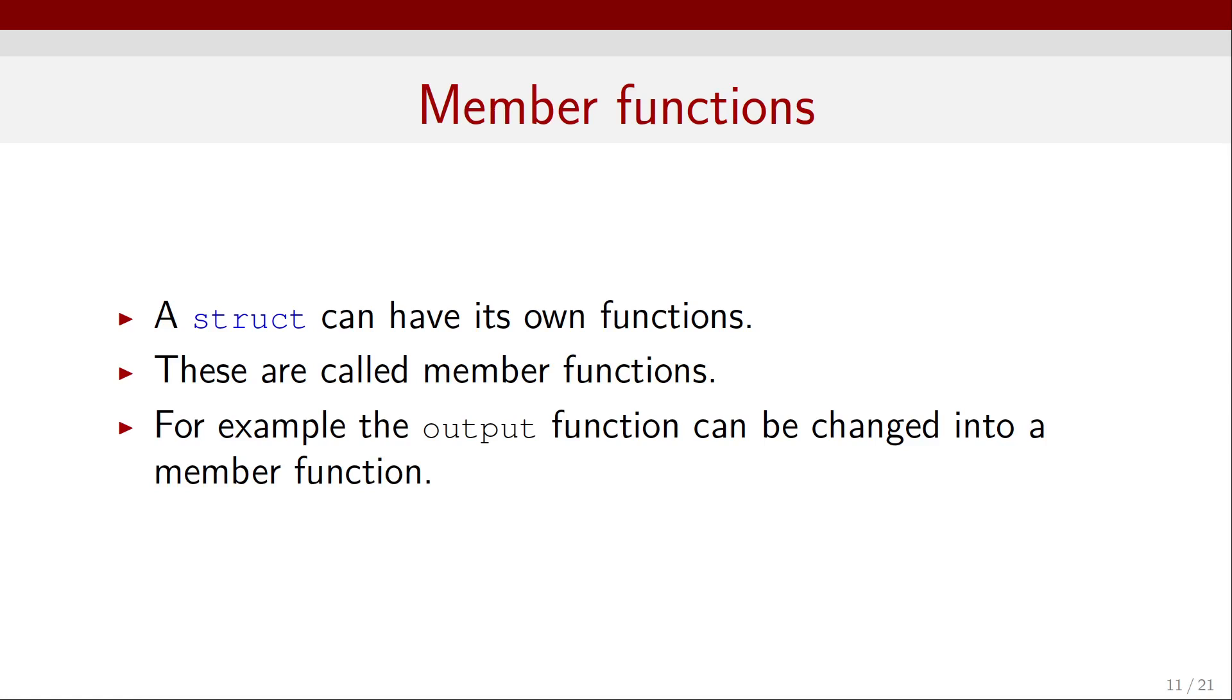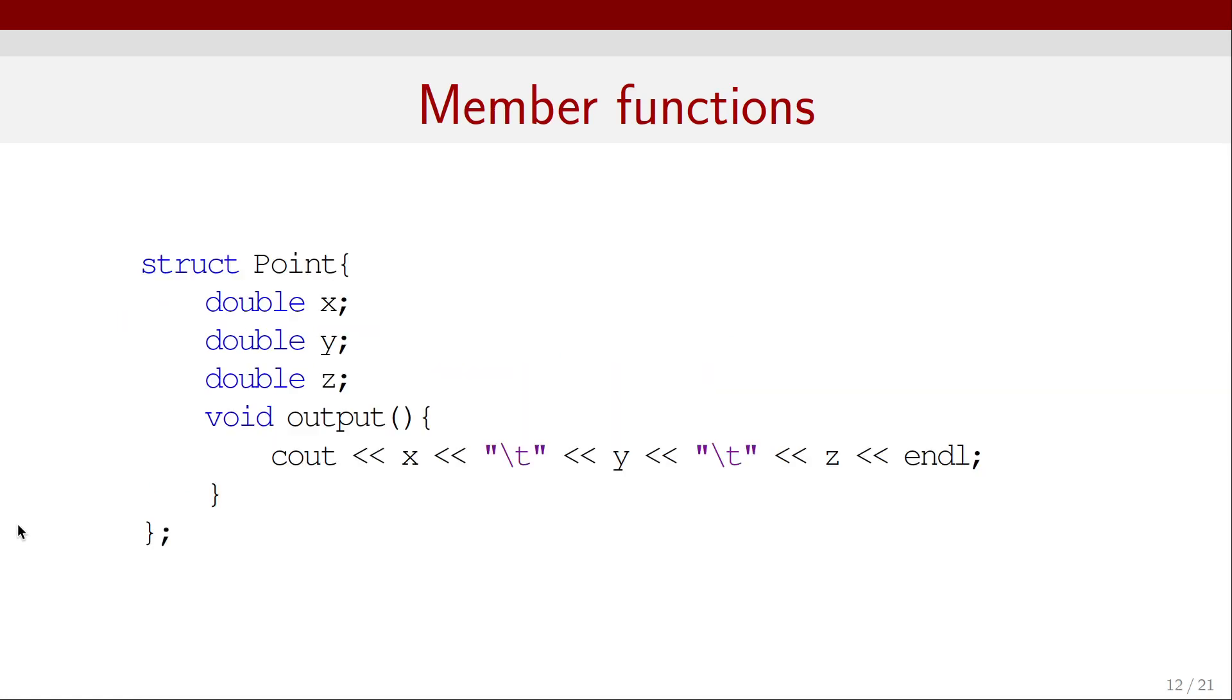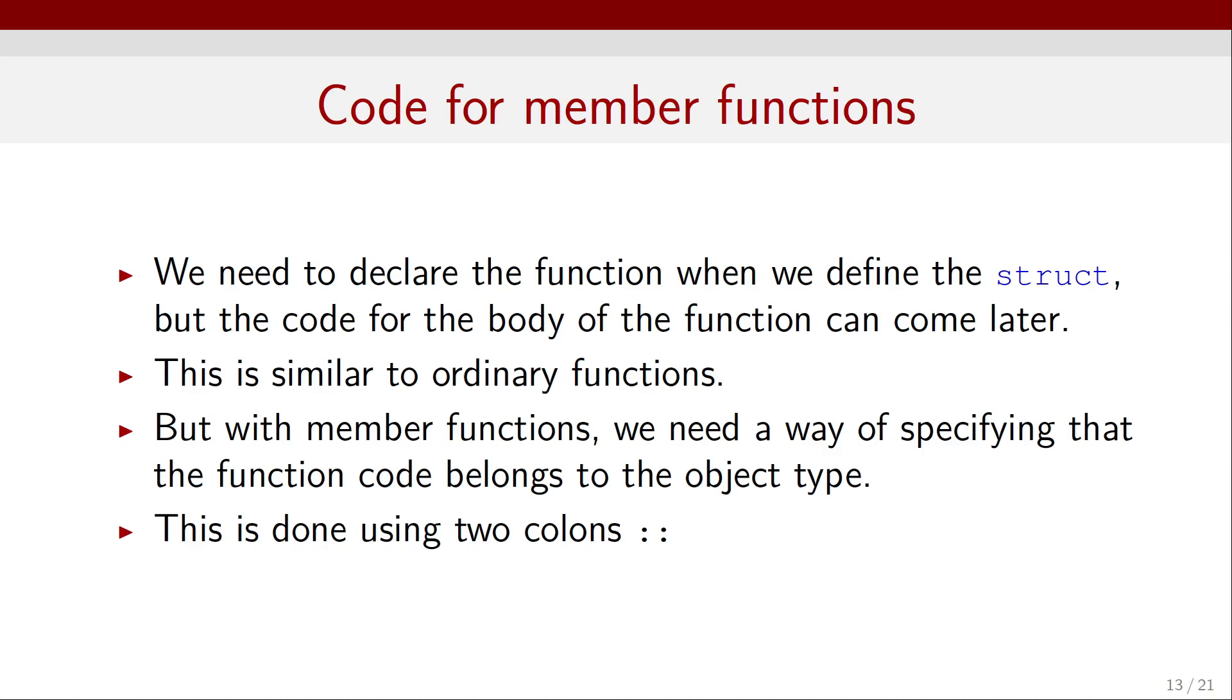Now, let's talk about member functions. A structure can have its own functions. These are called member functions. For example, the output function that we just defined can be changed into a member function. To do that, we would just move that function definition and declaration inside the structure. Now, in general, we need to declare the function when we define the structure, but the code for the body of the function can come later. This is similar to the way we deal with ordinary functions.